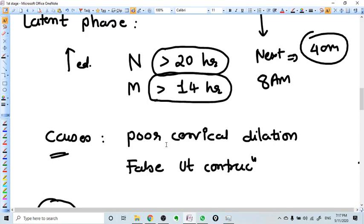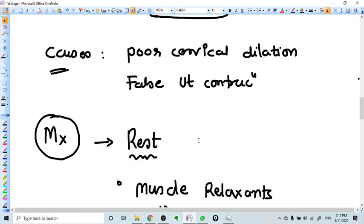The reason behind that is obviously poor cervical effacement, poor cervical dilatation. The uterine contractions are not true, they are false. What is the treatment?